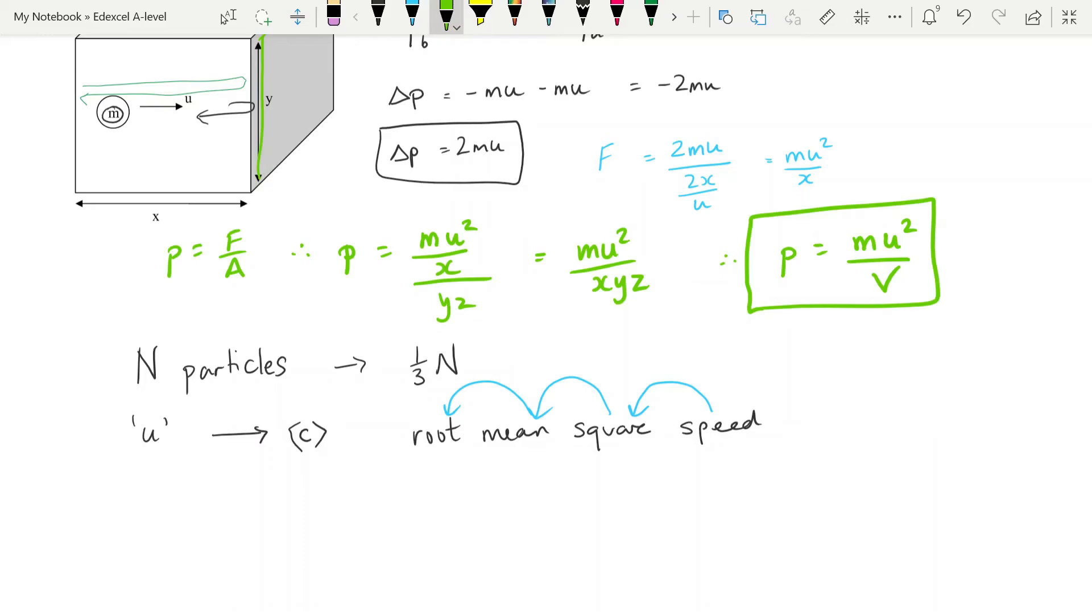Okay, now if we go back to our expression that we had for pressure, we're going to multiply this by 1/3 n, and we're going to replace the u with a c. So we've got pressure then is equal to 1/3 n times mc² over V. And if we simplify that out, we get 1/3 nmc² over V, or P times V is equal to 1/3 nmc². And that is what we were trying to derive.